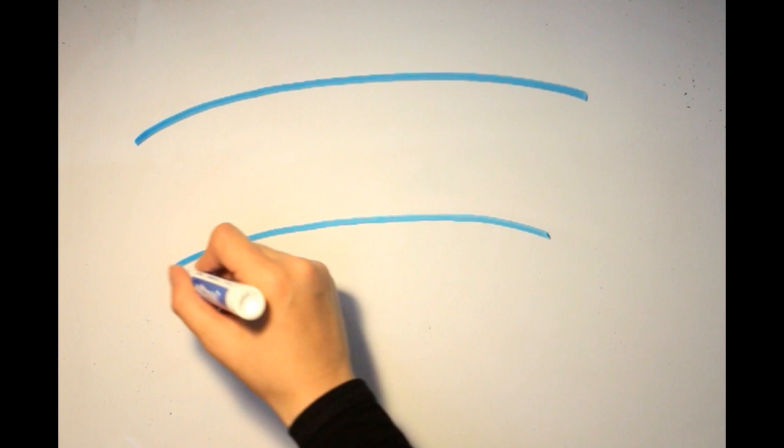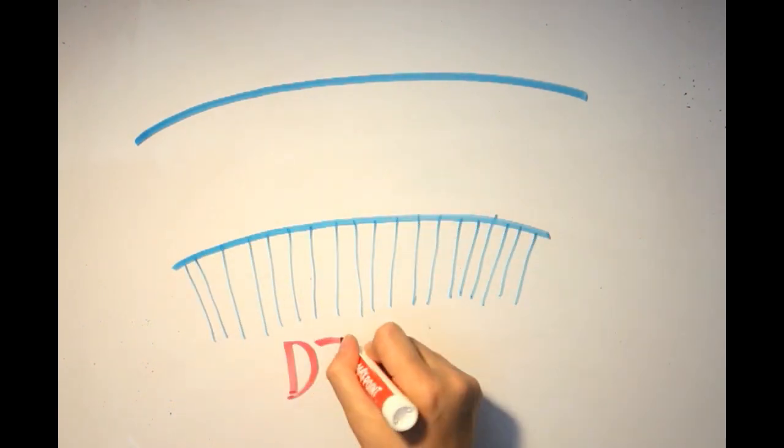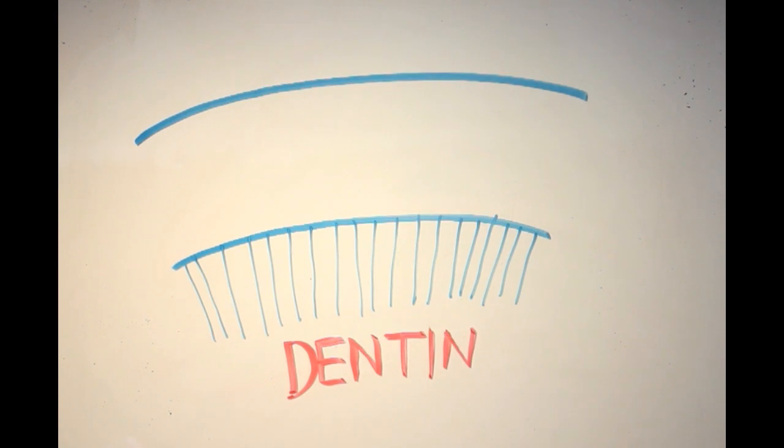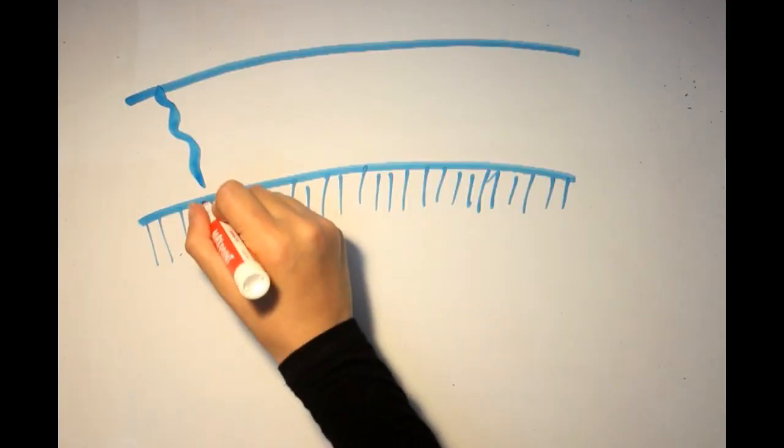Yet, enamel isn't perfect. For starters, under the microscope, you may clearly see some lamella, tufts and even spindles. But what are those exactly?